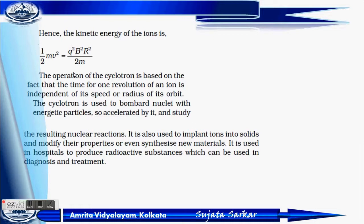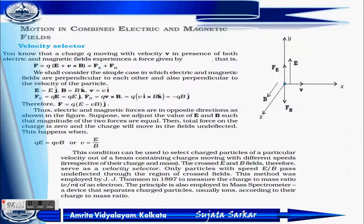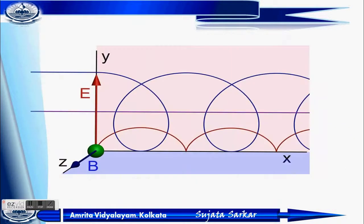This is all about the cyclotron. The cyclotron is used to bombard nuclei with energetic particles, resulting in nuclear reactions. It is also used to implant ions into solids to modify their properties and synthesize new materials. It is used in hospitals to produce radioactive substances for diagnostic and treatment purposes. This covers cyclotron and motion in combined electric and magnetic fields.